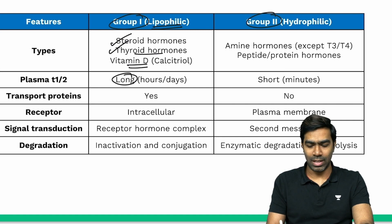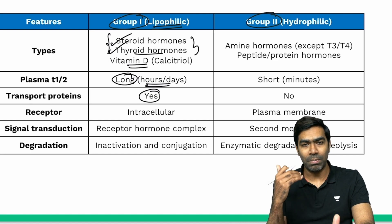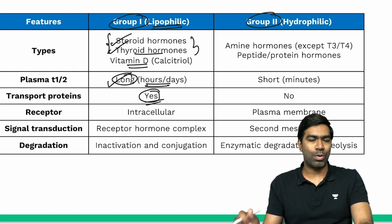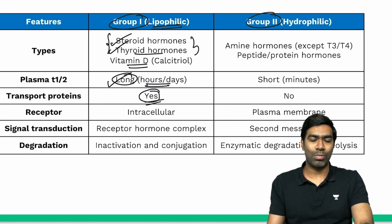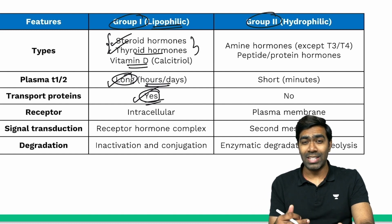The half-life of lipophilic hormones is long — in the order of hours to days — because they have transport proteins. Since they are lipid-soluble and not water-soluble, transport proteins are needed to carry them in the blood. For example, cortisol has cortisol-binding globulin, testosterone and estrogen have sex hormone-binding globulin, and thyroid hormones have thyroid-binding globulin. Albumin also carries a variety of steroid hormones.